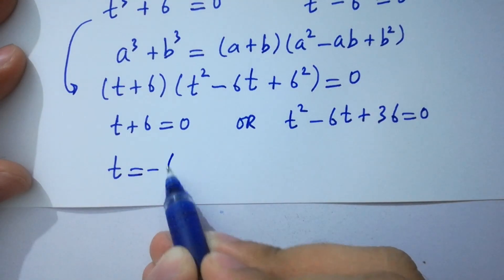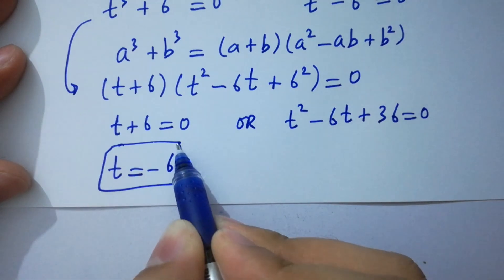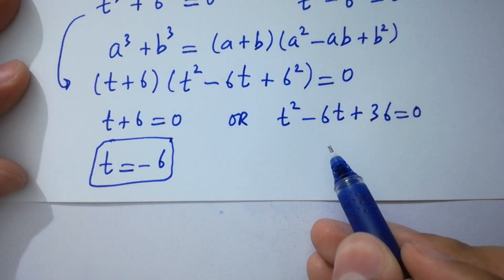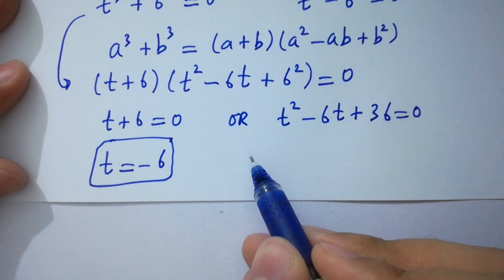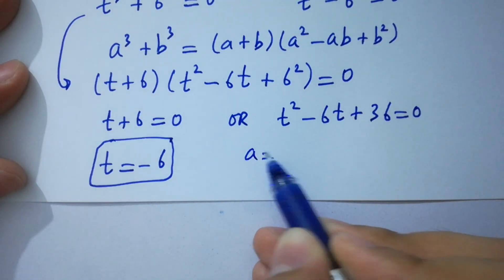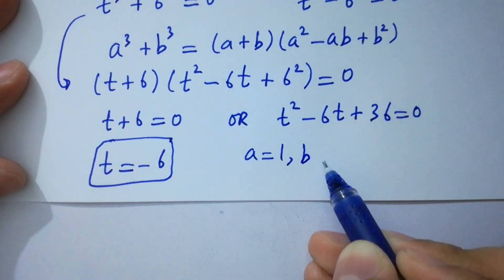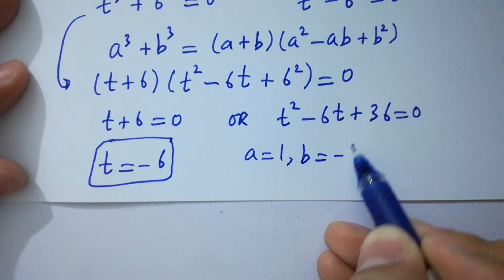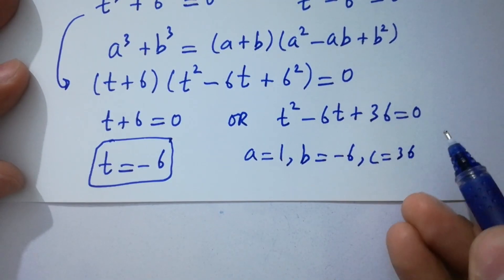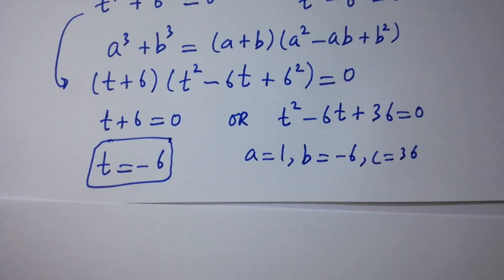Setting t + 6 = 0, we get t = -6. For the quadratic t² - 6t + 36 = 0, we identify A = 1, B = -6, and C = 36, and apply the quadratic formula.